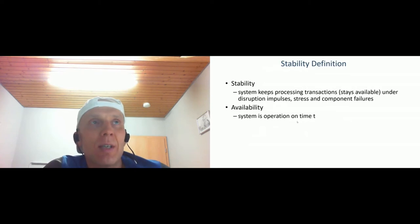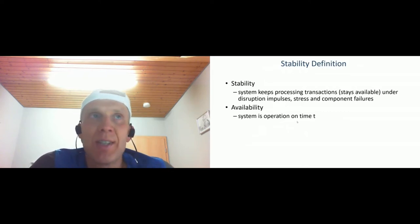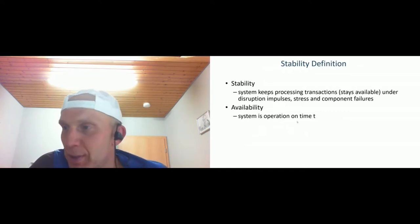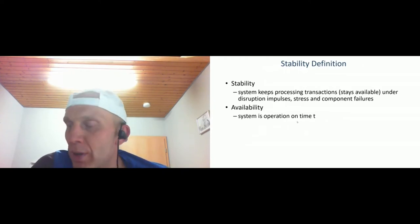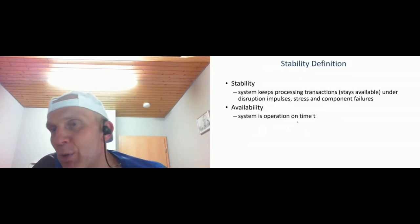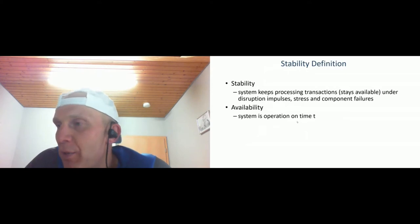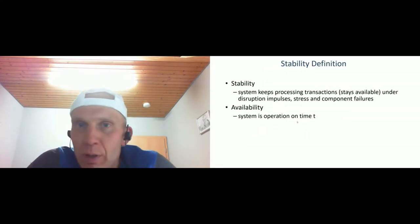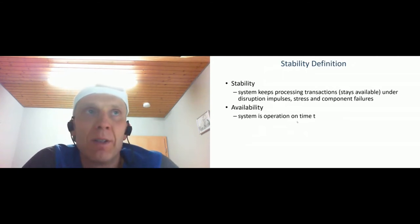So this was an interesting case from the customer project. After that I looked in more detail at formal patterns for making a system more resilient. What is system stability? Stability is a characteristic of the system that keeps processing transactions — it stays available even under some disruption impulses. Even if something bad happens with the network, with a database, with asynchronous communication, or with some component failures or high load, the system is still able to proceed with transactions. Perhaps not with 100% functionality, perhaps some features won't be available, but most users can still use the system. The system keeps useful. This is a stability definition.